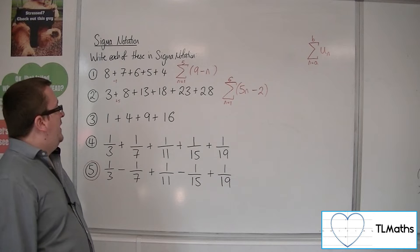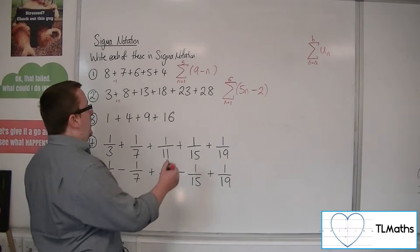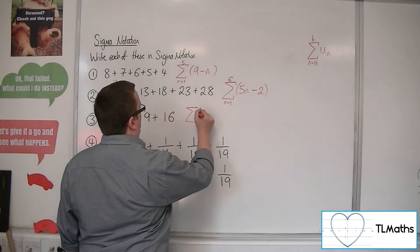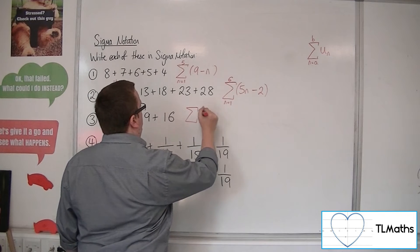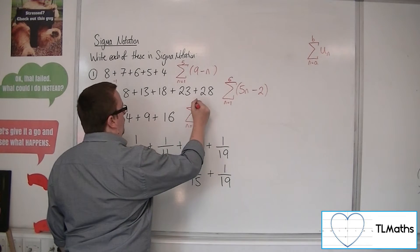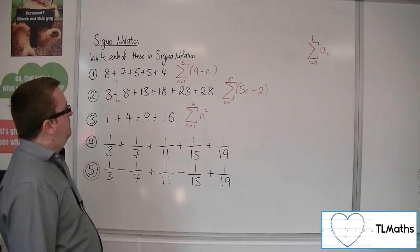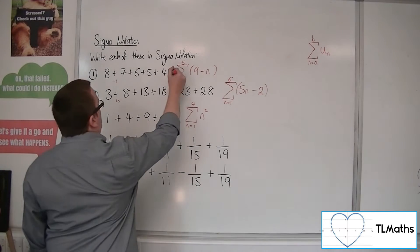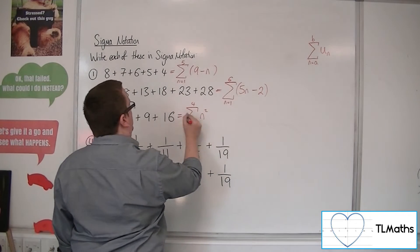1, 4, 9, 16. These are the square numbers. So these are the square numbers, n squared. That's going from n is 1 up to 4. We could really put an equal sign next to each of these.